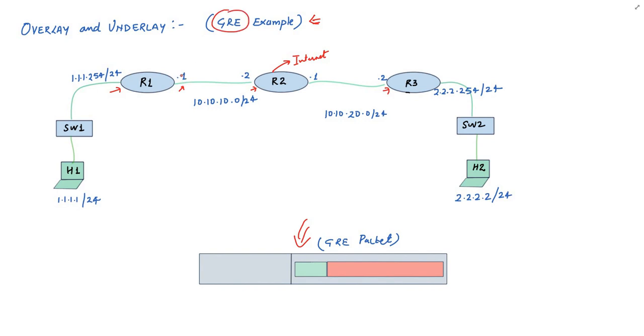What GRE does here is that it creates a logical point-to-point link between R1 and R3. Physically, this link does not exist as it is a virtual link.